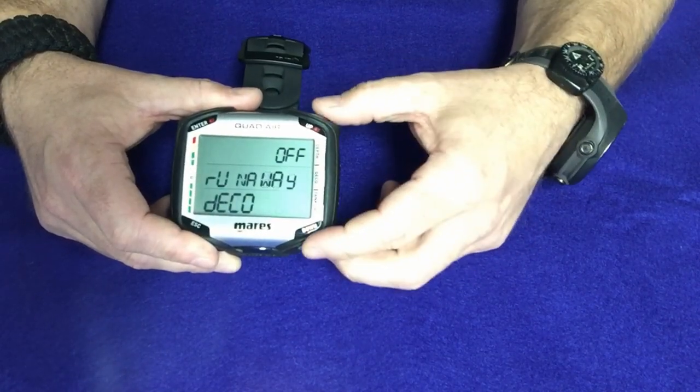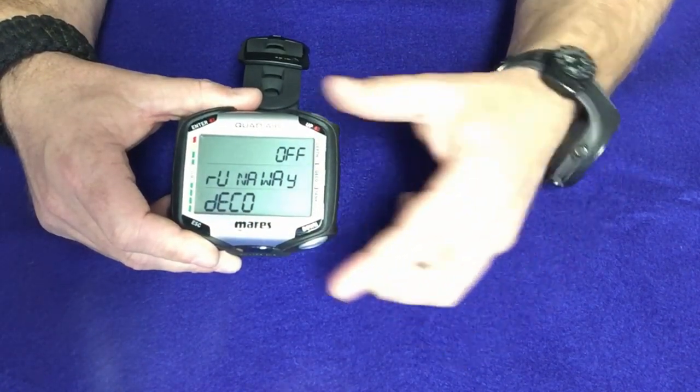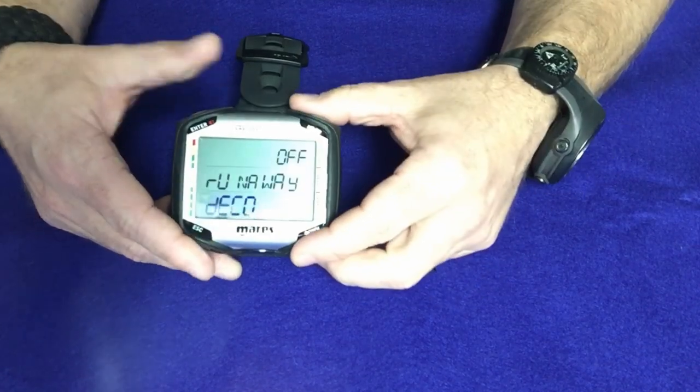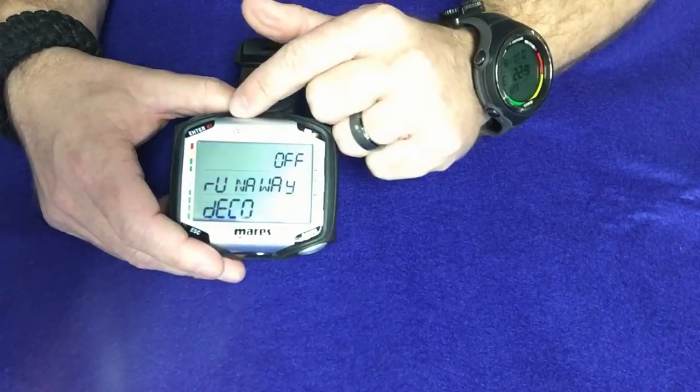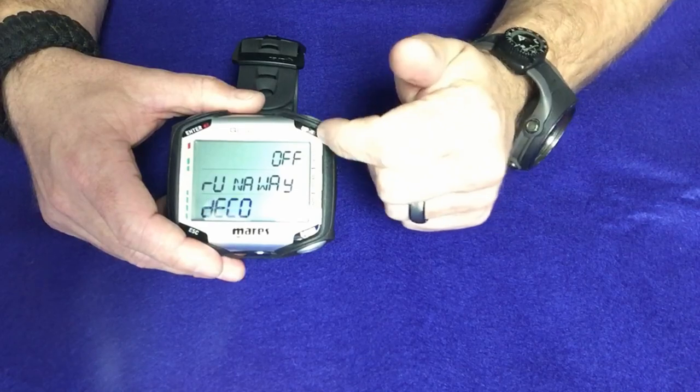Moving on, it'll show the ascent rate. It'll show a runaway ascent and a deco. You can set that on or off by simply hitting the enter button and then changing it from off into on.